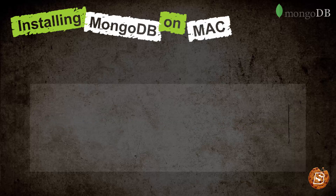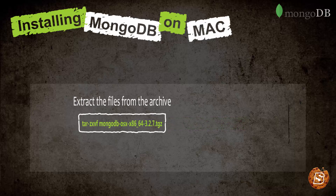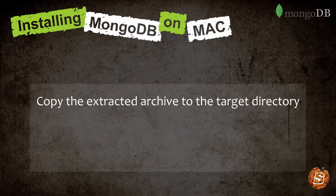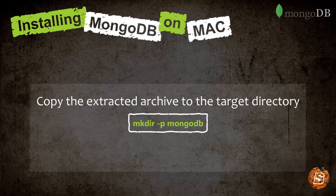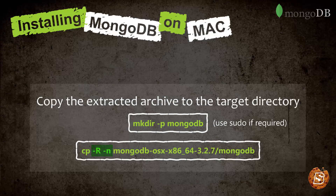And once you have downloaded it, you can extract the files from that archive by using this command: tar -zxvf mongodb. Then we need to copy the extracted archive to the target directory. You can create it like this: mkdir -p mongodb, and if required you can make use of the sudo command. Then just copy that file to that directory by using the cp command — minus r minus n — mongodb and the whole path, with the directory name given as mongodb.